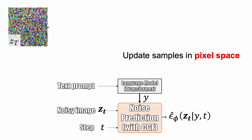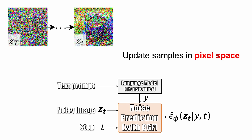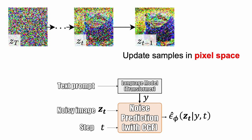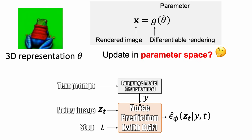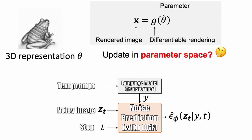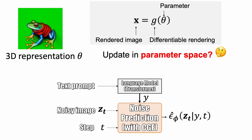These trained models allow us to iteratively update the samples in pixel space. But this only works for 2D images. The shape and appearance of a 3D object are encoded by some parameter theta. How can we use 2D diffusion models to update the 3D representation in parameter space?